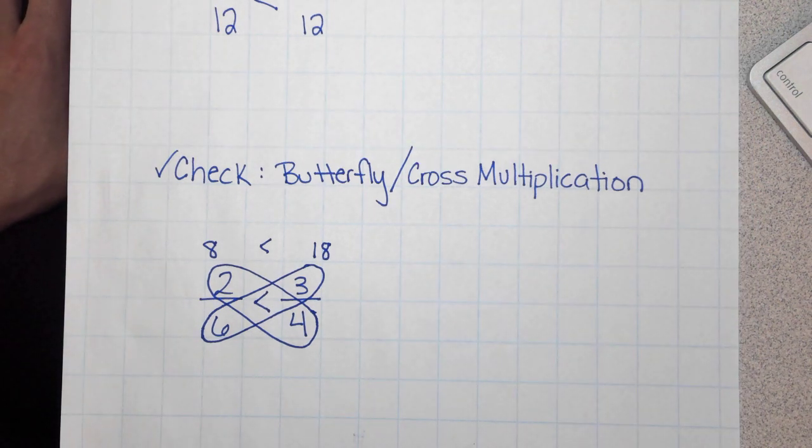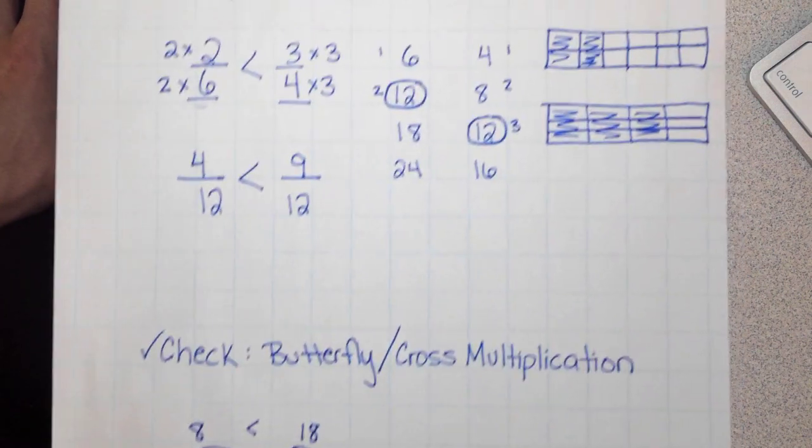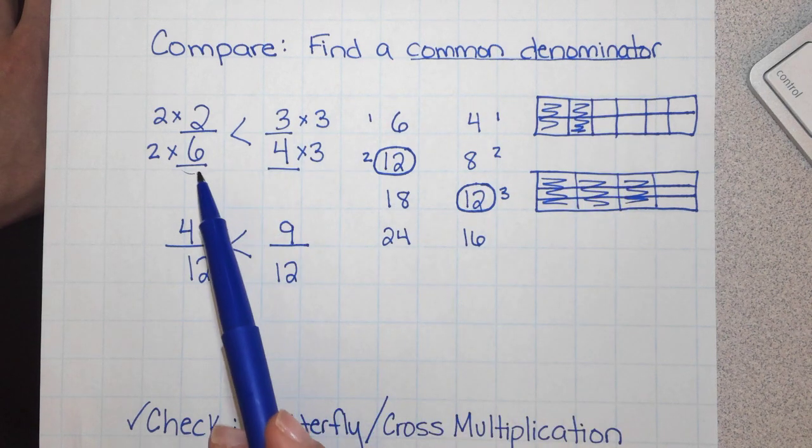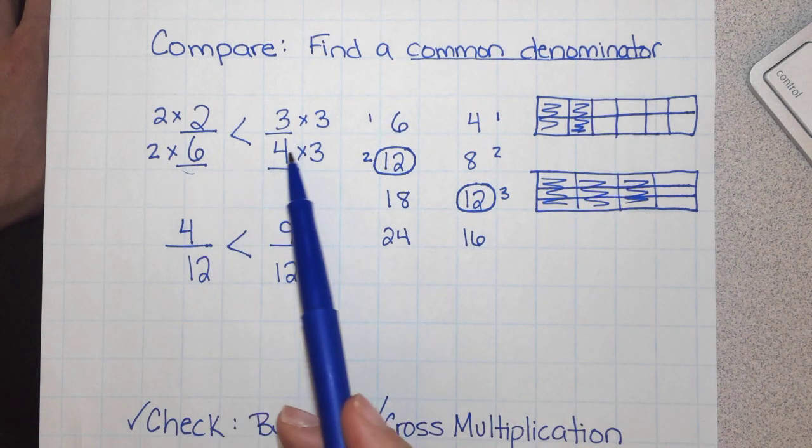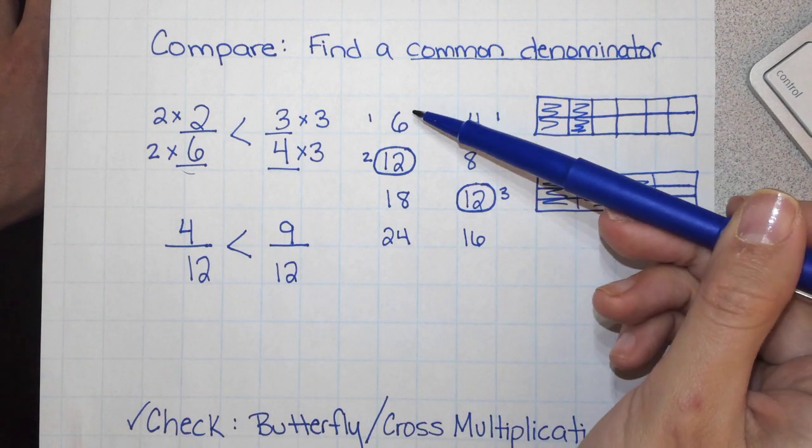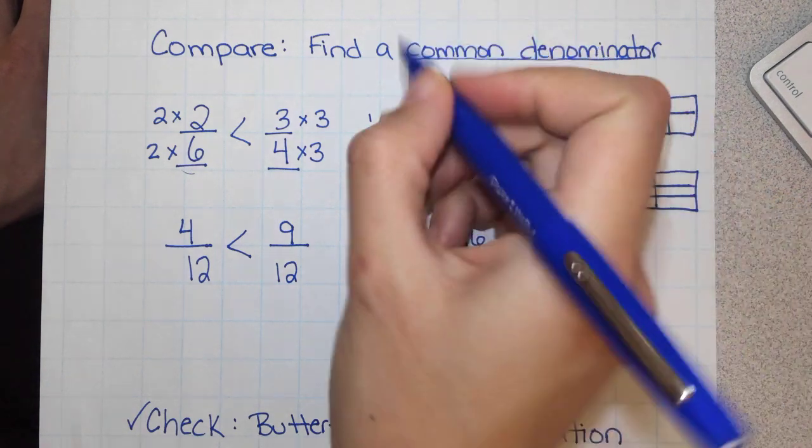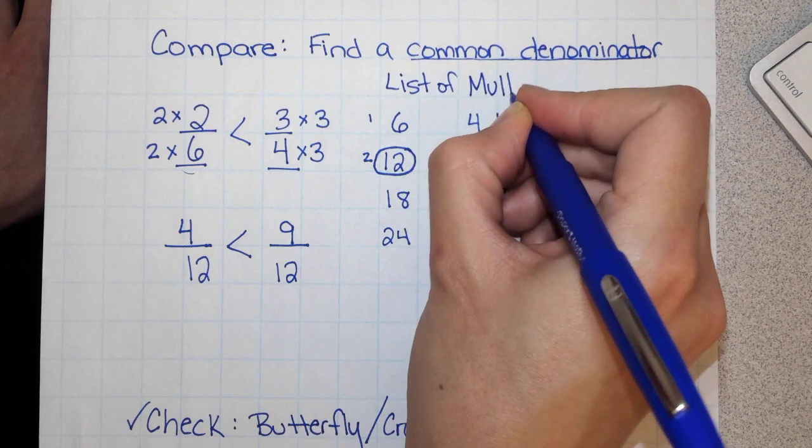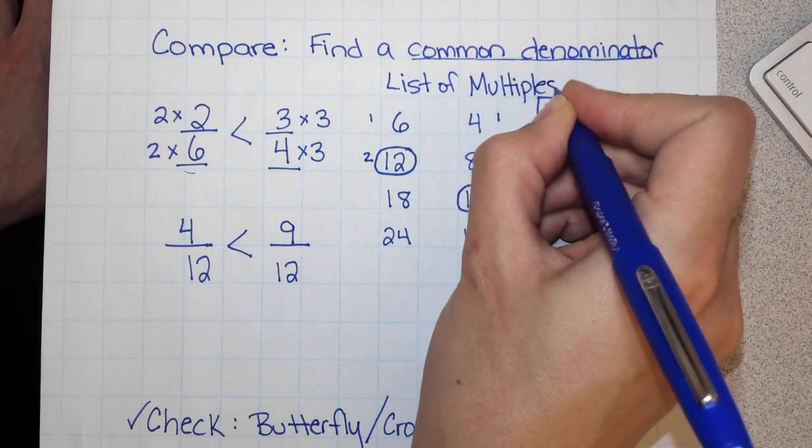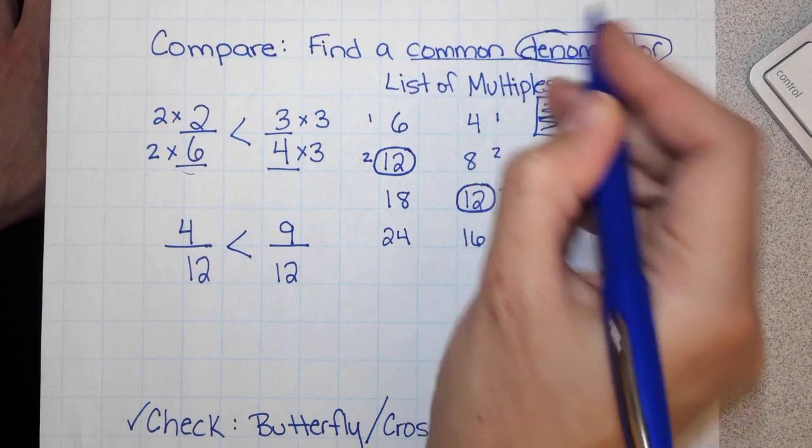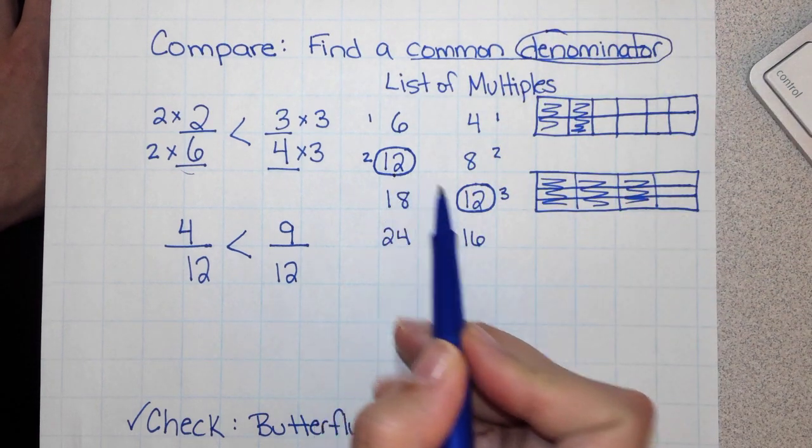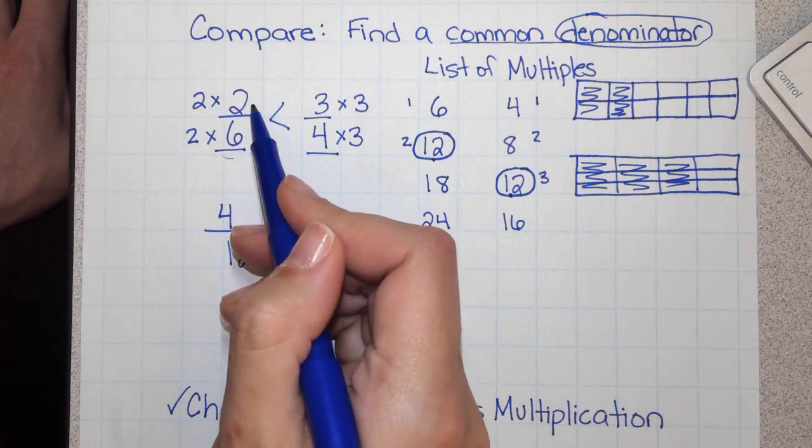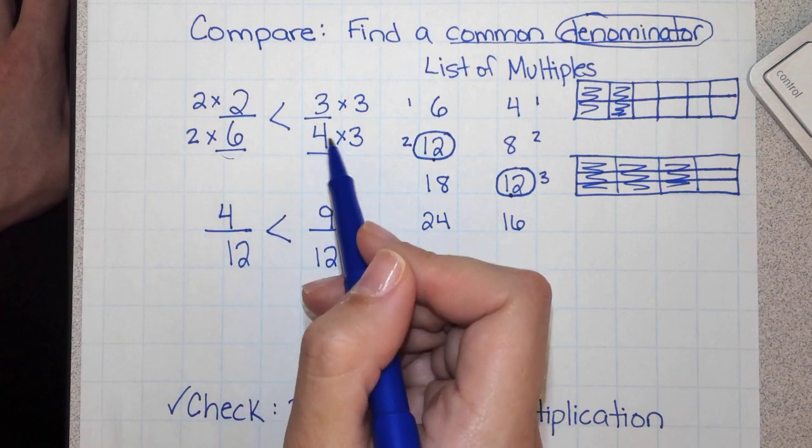So let's review how we compared 2 sixths and 3 fourths. The first step was to find a common denominator. So I identified the denominators 6 and 4. And then I made their list of multiples to find a common denominator. And the number that was common was 12.